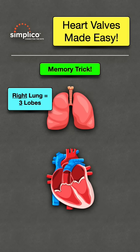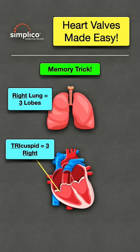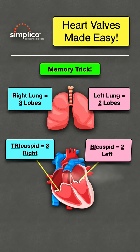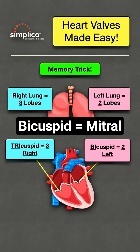The right lung has three lobes, and the tricuspid valve — remember TRI means three — is on the right. The left lung has two lobes, and the bicuspid valve — remember BI means two — is on the left. The bicuspid valve is another name for the mitral valve.